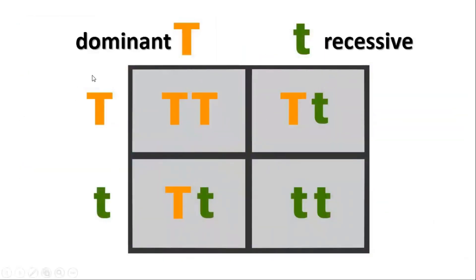Dominant and recessive are two forms of a gene. Dominant is a form of gene, and recessive is also a form of gene.